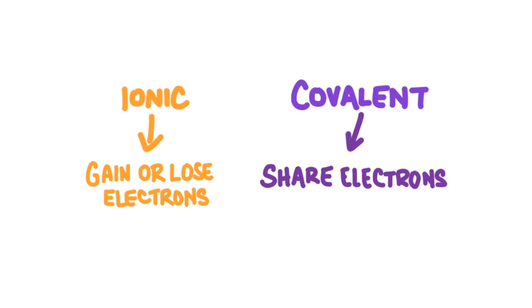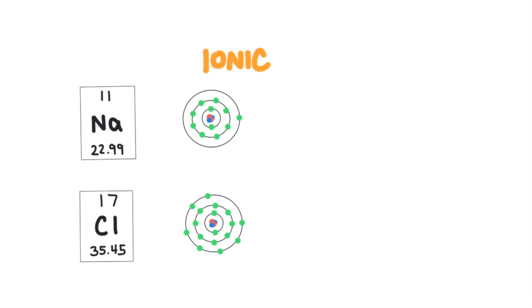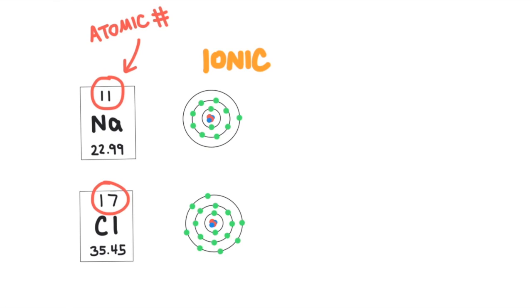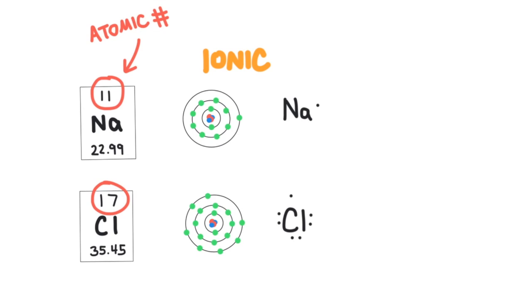Let's start with ionic bonds. Ionic bonding is all about elements gaining or losing electrons. For example, sodium has 11 electrons and chlorine has 17 electrons. The complete Bohr diagram for sodium shows two electrons in the first energy level, eight in the second, and one in the third energy level. For chlorine, it shows two in the first, eight in the second, and seven in the outermost energy level. Lewis structures only show the valence electrons, so sodium has one valence electron and chlorine has seven valence electrons.